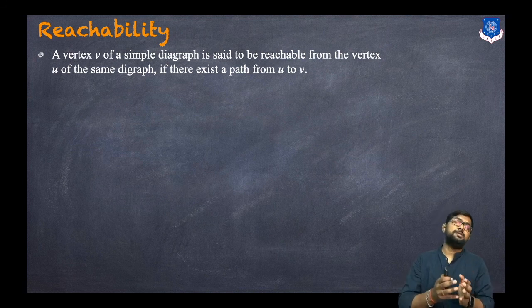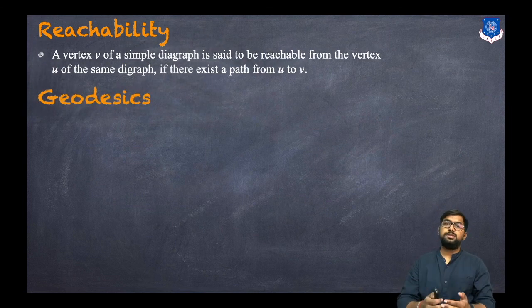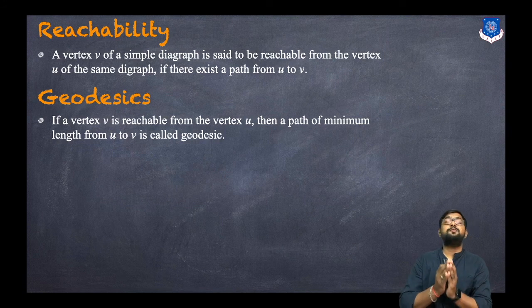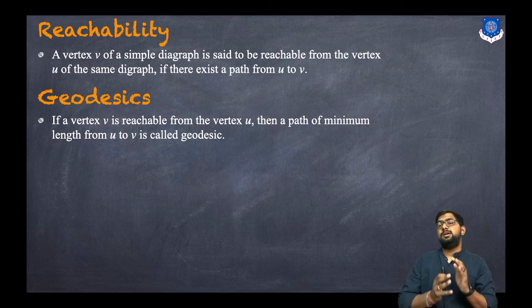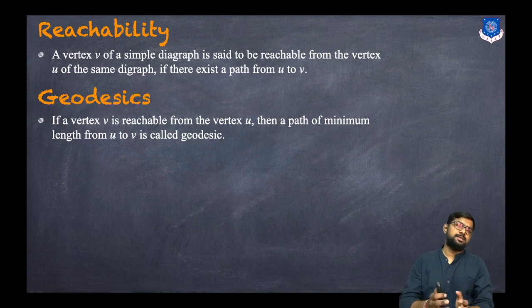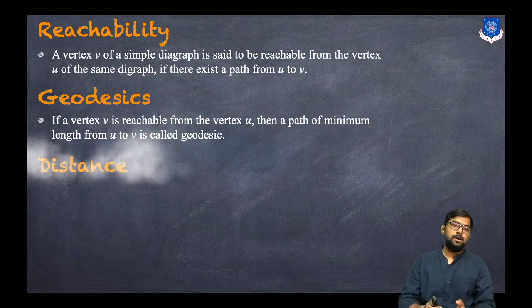Now let us understand what is a geodesic. If a vertex v is reachable from vertex u, that means there is a path between u and v. A path of minimum length from u to v is called a geodesic. So it exists as a path and it is of the minimum length.